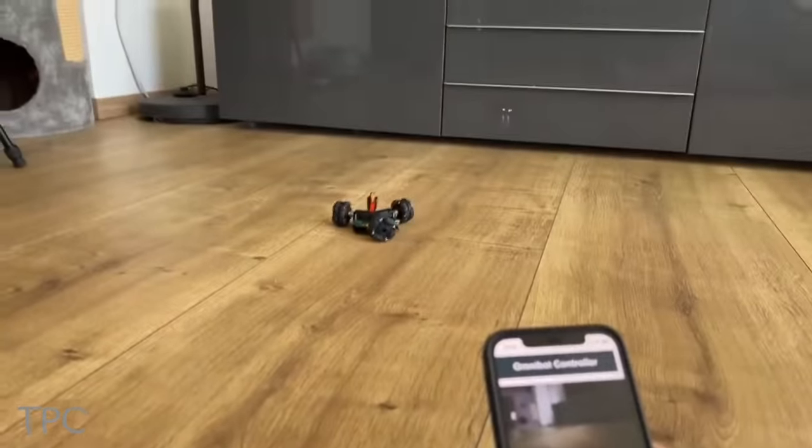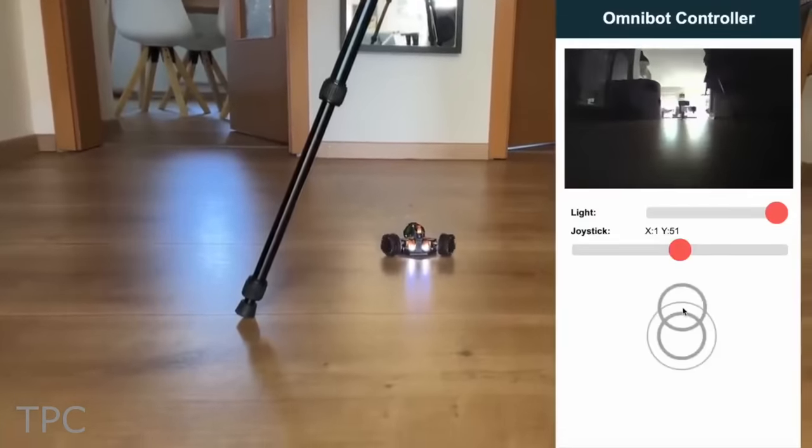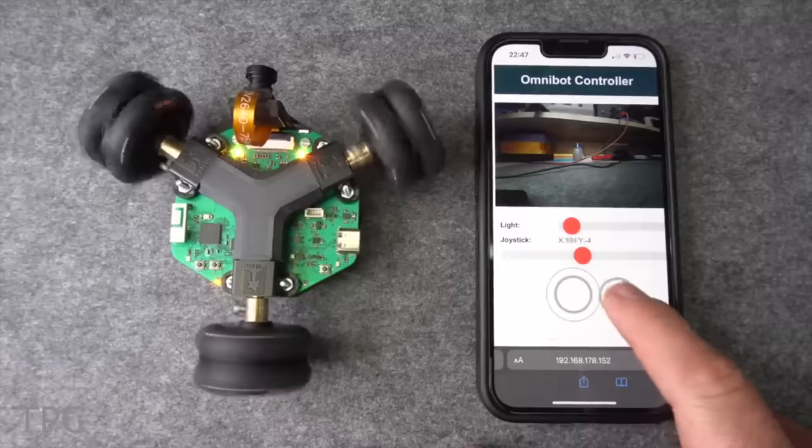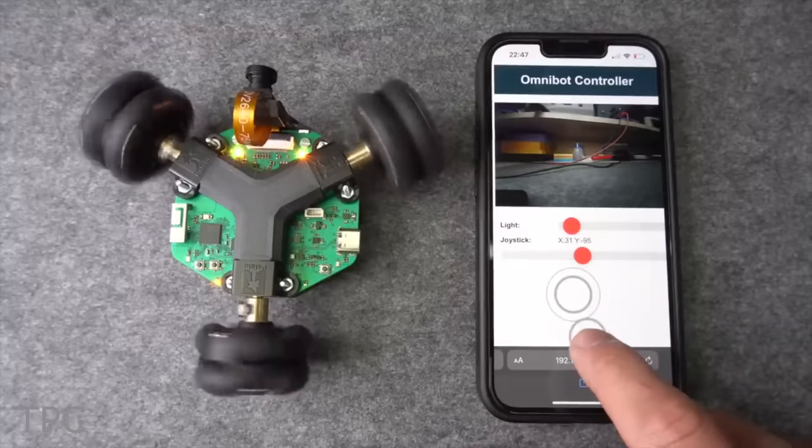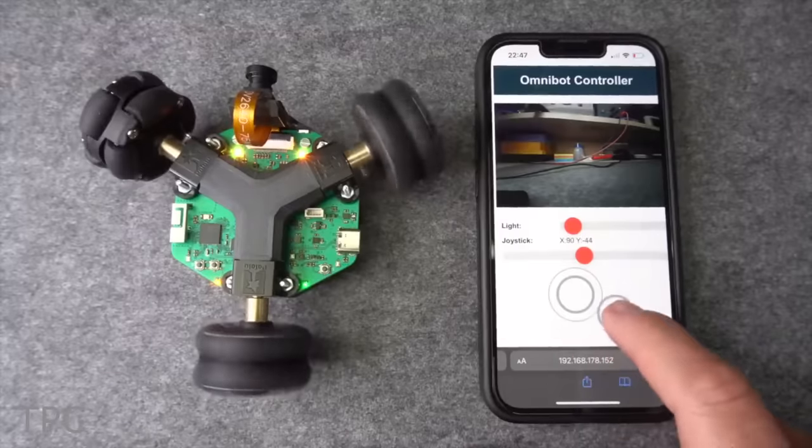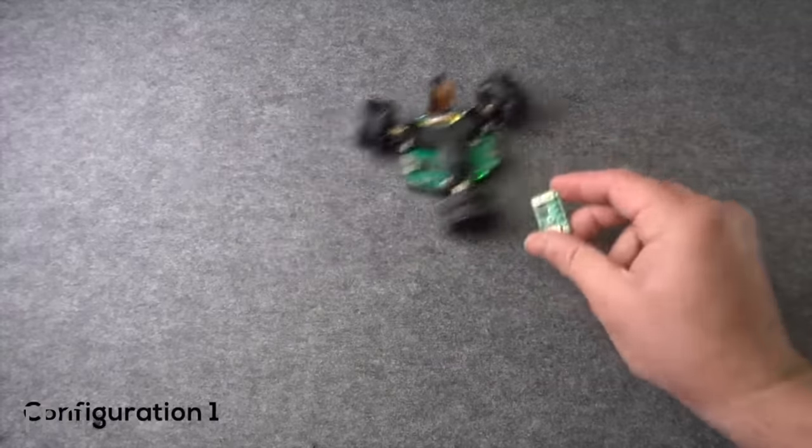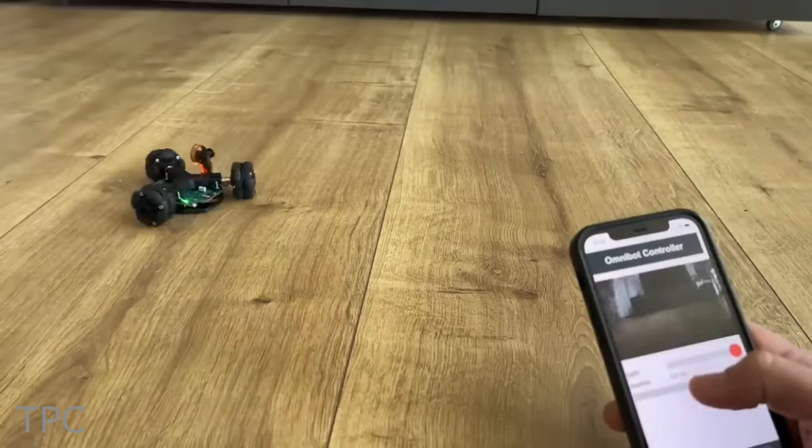A camera at the front streams an FPV video to the app. The robot can be controlled either via a web server that contains a slider and a joystick, or using the PicoClick, which moves the robot based on its orientation. Both modes have their own advantages.